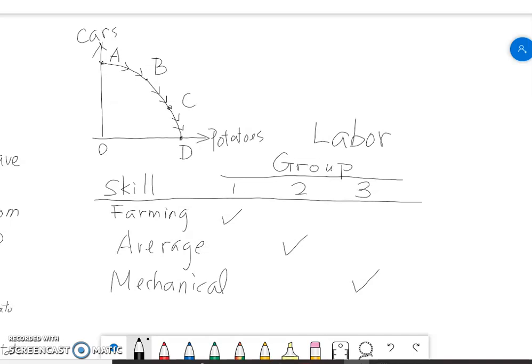So they're gonna leave the auto factory and go to the potato field. And when they start producing potatoes, the economy as you could imagine will produce a lot of potatoes but only sacrifice a small number of cars. Because these farmers when they leave the auto factory, it's not gonna hurt auto output that much, but it's gonna boost the potato output.